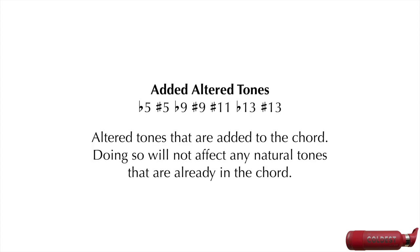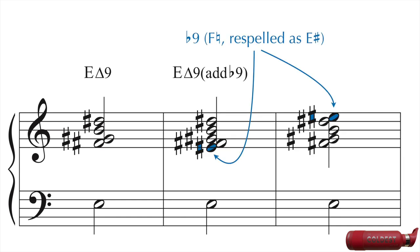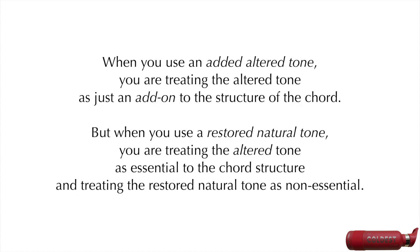Added altered tones are altered tones that are added to the chord. Doing so will not affect any natural tones that are already in the chord. For example, take E major 9. If you add the b9, then you end up with E major 9 add b9. This chord has both the natural 9 and b9. When you use an added altered tone, you are treating the altered tone as just an add-on to the structure of the chord. But when you use a restored natural tone, you are treating the altered tone as essential to the chord structure, and treating the restored natural tone as non-essential.